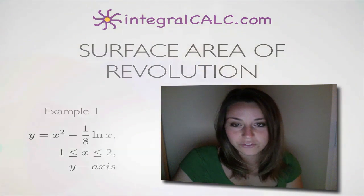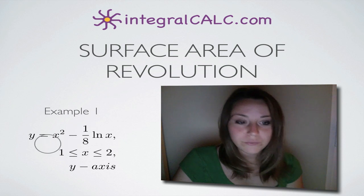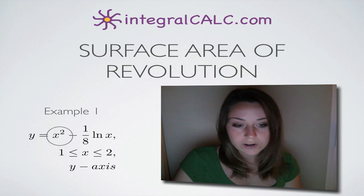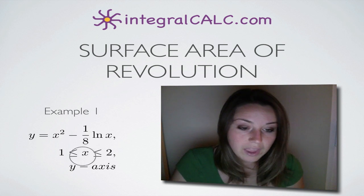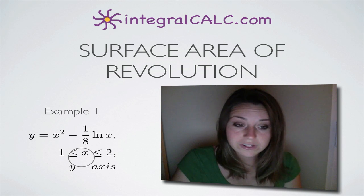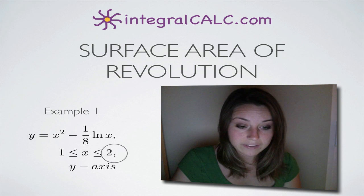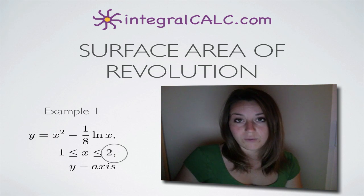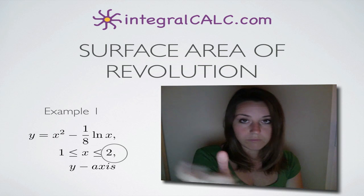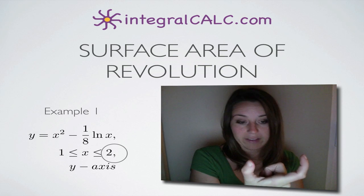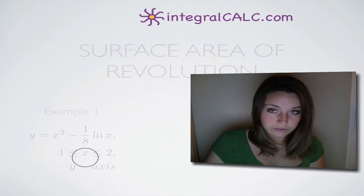Today we're going to be doing a surface area of revolution problem. We're given the equation y equals x squared minus one-eighth ln of x, and we're asked to evaluate the surface area of revolution between x equals 1 and x equals 2, revolving around the y-axis.